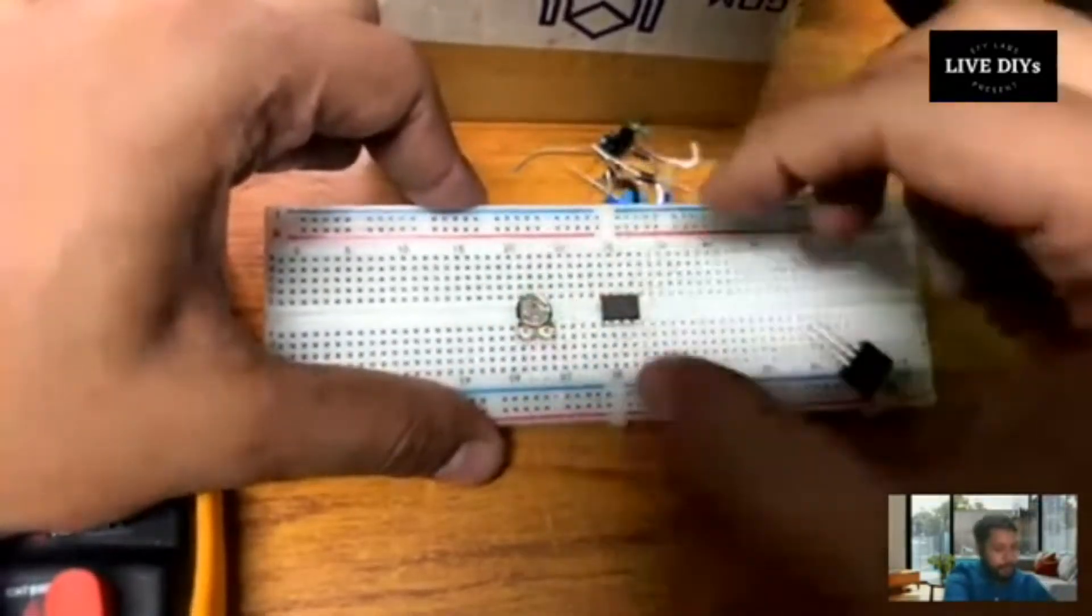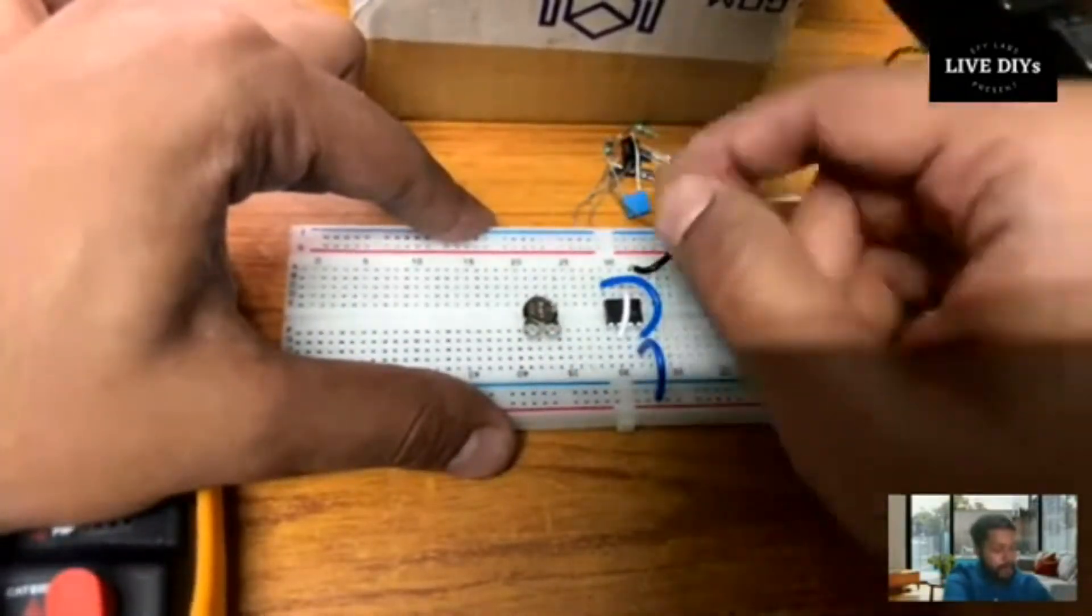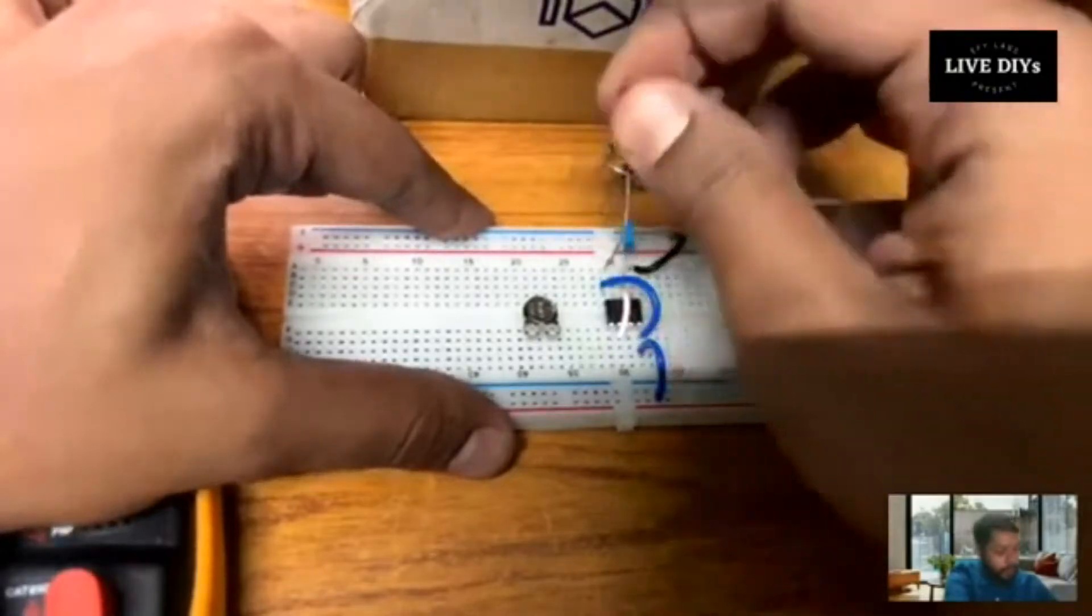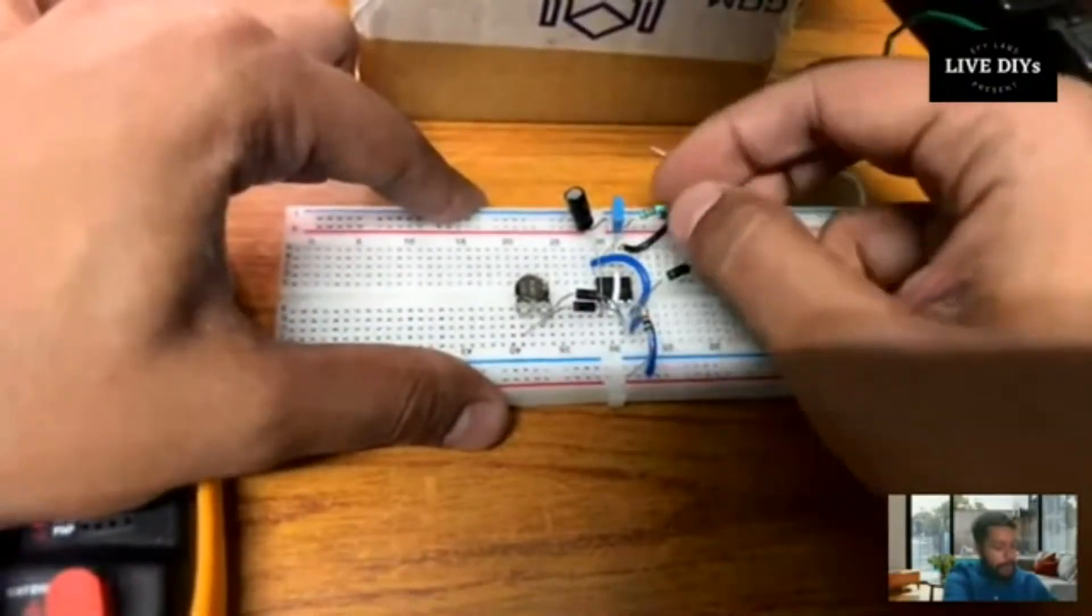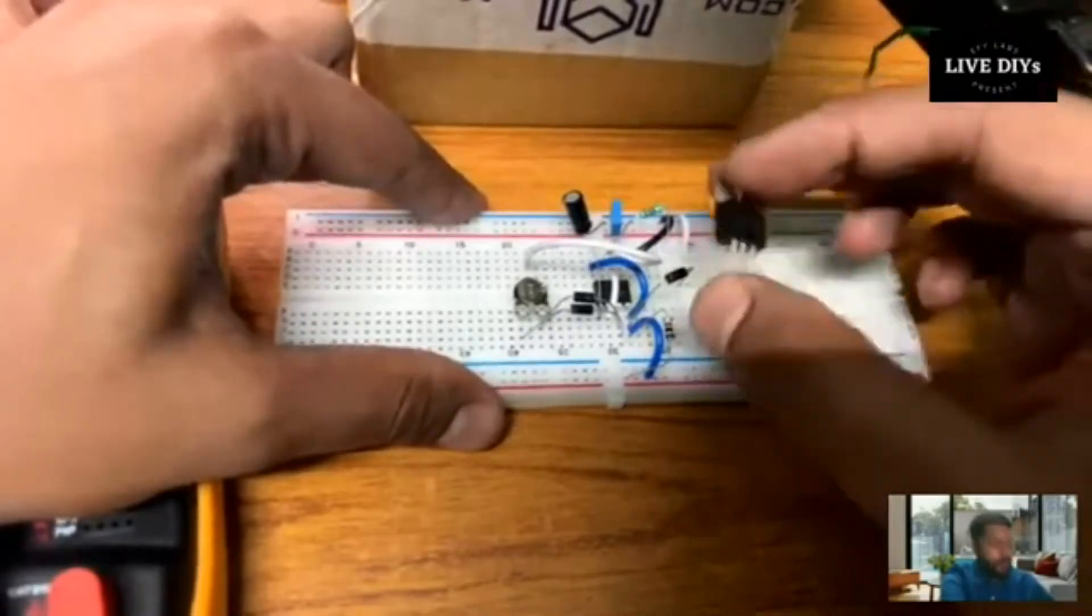The components required are a 100k potentiometer, 555 timer IC, capacitors, diode, and IRFZ44N MOSFET.